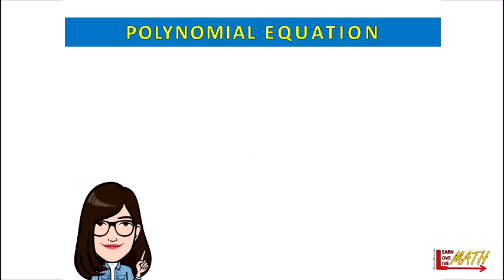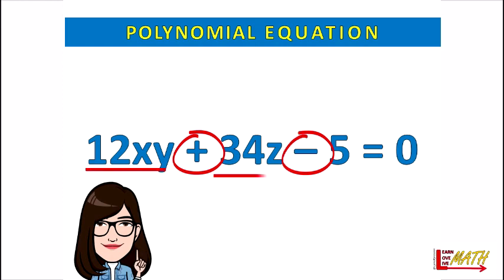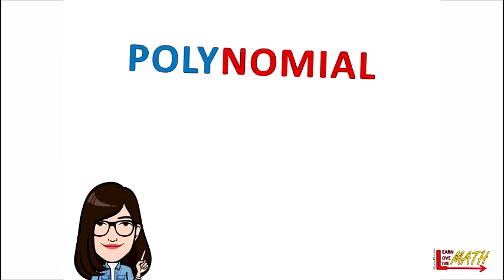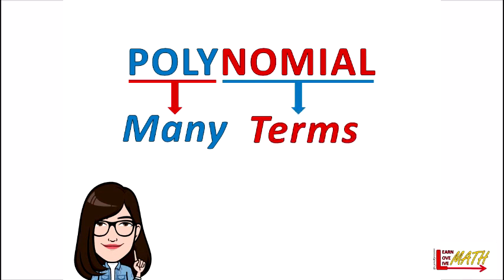To fully understand what polynomial equations are, let us look at the concept of terms and expressions. For example, using plus and minus signs, we have three terms: 12xy, 34z, and 5. Now we can move on to the most important concept in algebraic expressions — the concept of polynomials. As you can see, the word has been colored into two parts: 'poly' means many, and 'nomial' means parts or terms in algebraic expressions. That is how the word polynomial comes about.